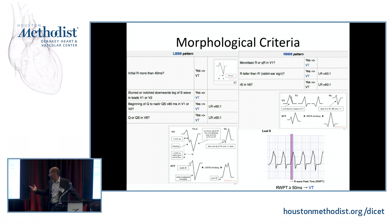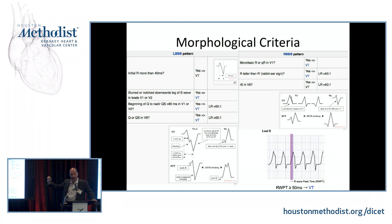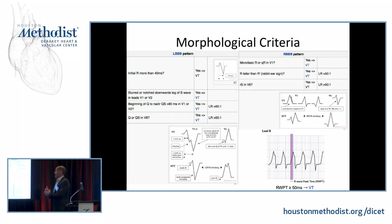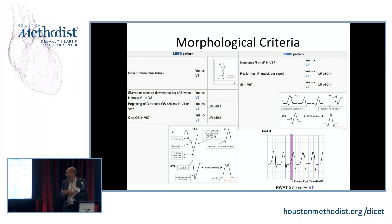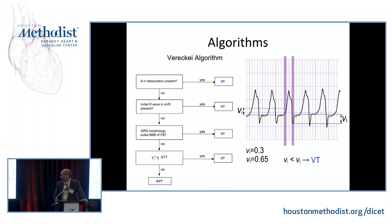For right bundle branch block morphology, we talk about the rabbit ears in V1. In RBBB aberrancy, the second rabbit ear is taller than the first one. If that is not the case, you have to think of VT. In a wide complex tachycardia with a slurred QRS in V1, it is either an accessory pathway with antidromic tachycardia — which will look exactly like VT — or VT itself. If there is no slurring, SVT is more likely.